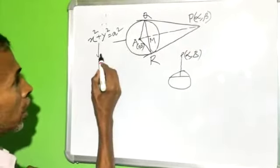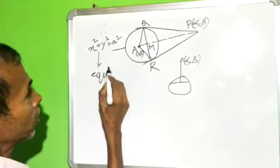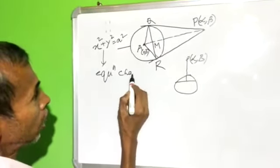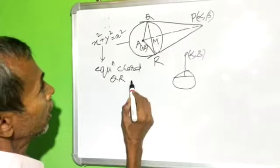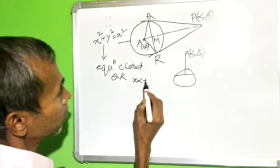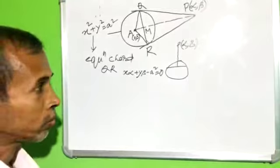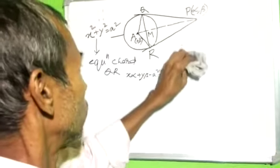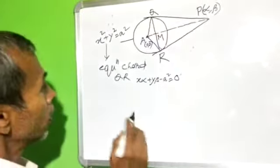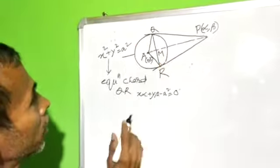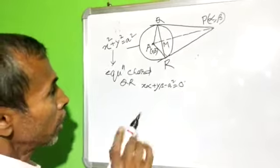Since P(alpha, beta) is on the circle, the equation changes. The equation of chord QR is: x·alpha plus y·beta minus a square equal to 0.